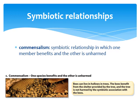Commensalism is where one species benefits and the other is unharmed. A good example: beehives are commonly found in hollows of trees. The bees benefit — they have shelter provided by the tree where they can make honey and avoid predators — while the tree is neither harmed nor benefited. That's what we refer to as commensalism.